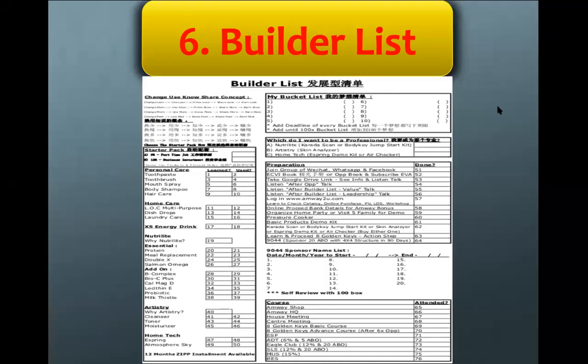After sharing the service step with your customer, the next step you need to do is the Builder List. This step applies to anyone positioning themselves as a builder. As long as they are positioning to become a builder, you need to proceed with this step — called Builder List, in Step 6, which is Action Step 6, point 6.1: give them the list. This Builder List can also be found in Google Drive, in the zero-five documents, Others folder.